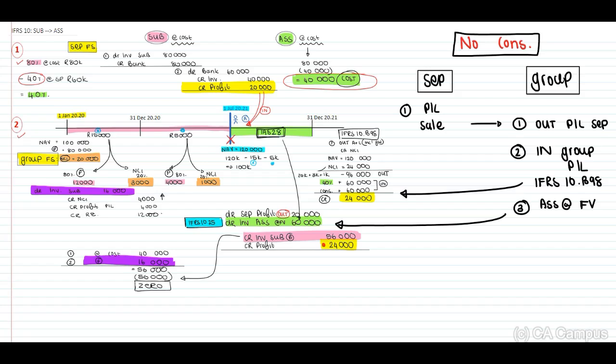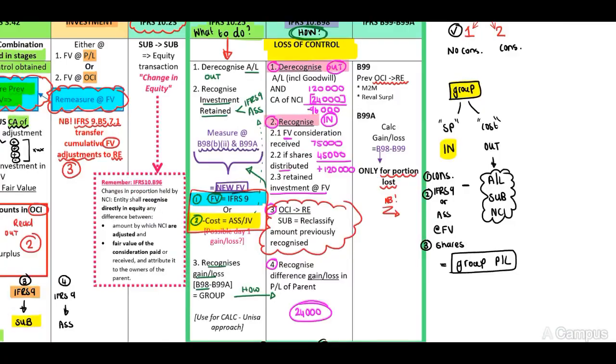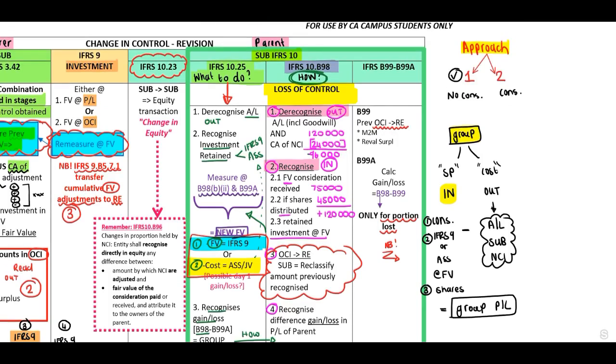In the last section of Changing Control, we are going to cover IFRS 10, paragraph 23.